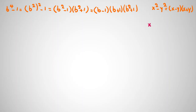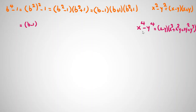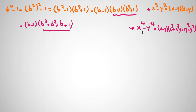A second way uses the identity x^4 - y^4 = (x - y)(x³ + x²y + xy² + y³). Applying this here gives b^4 - 1 = (b - 1)(b³ + b² + b + 1). You can verify both factorizations are consistent. Both identities are useful in different problems.